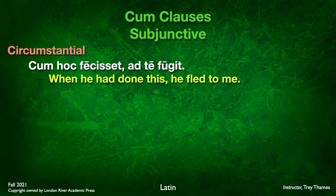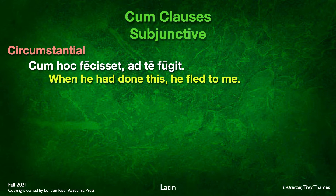Here's an example of a circumstantial cum clause: cum hoc fecisset, ad te fugit. Cum fecisset — fecisset is subjunctive pluperfect from facio, so we translate as indicative pluperfect: 'when he had done this.' Ad te fugit means 'he fled to you.' That's circumstantial — the relationship between the main verb and secondary verb is the general circumstances surrounding the fleeing: when he had done this.